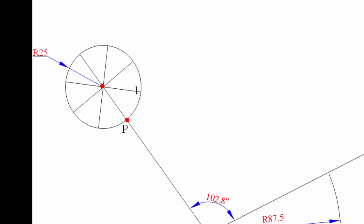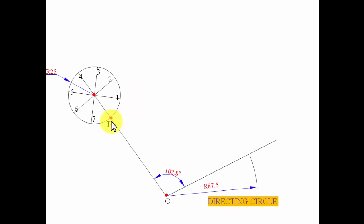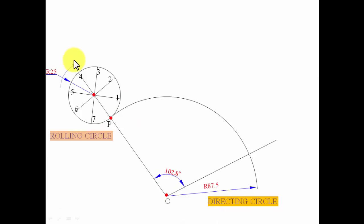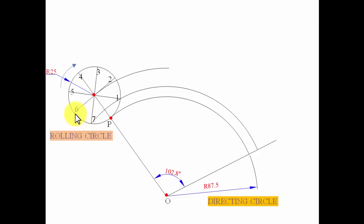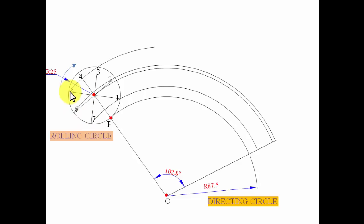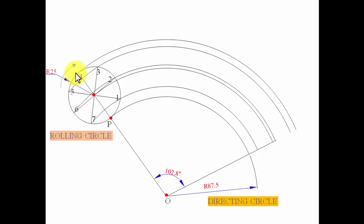Now we number the divisions one through eight in the anti-clockwise direction — there is a specific reason for this. Next, with O as center and using the radii to each numbered point, we draw arcs — arcs from points corresponding to O5, O6, O7, and so on — since the rolling circle rolls in the clockwise direction.